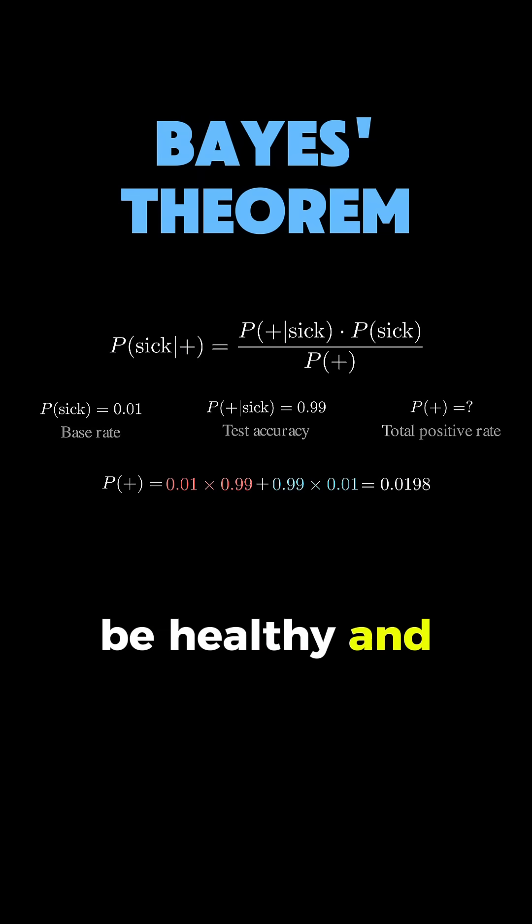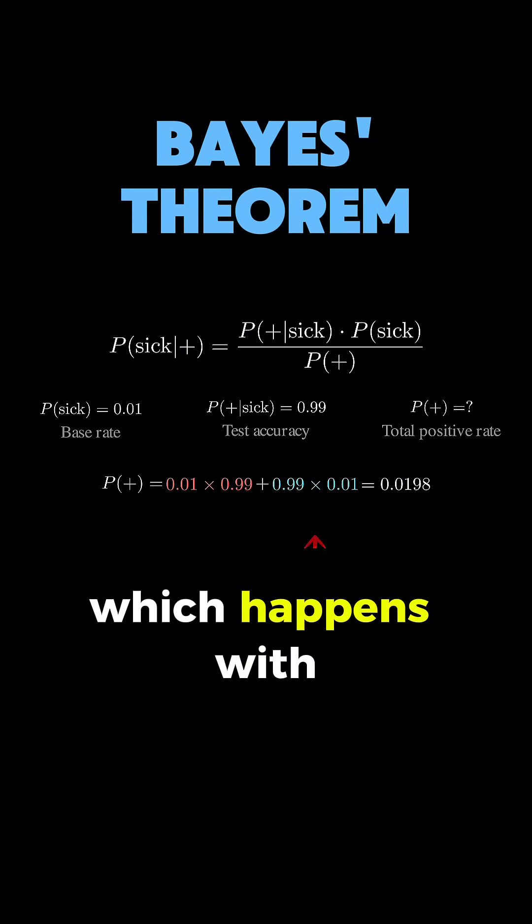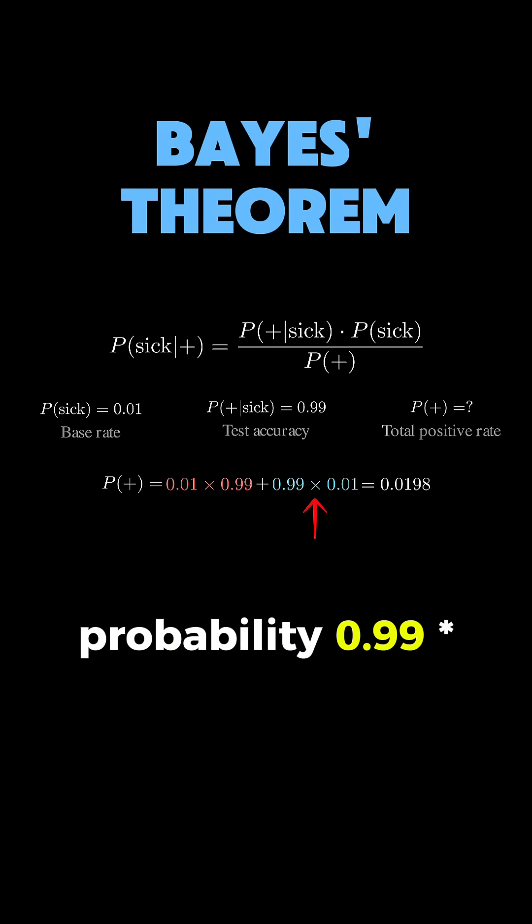Or you could be healthy and test positive, which happens with probability 0.99 times 0.01, also giving us 0.0099. Adding these together, we get 0.0198 as our total probability of testing positive.